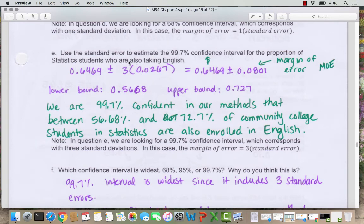So here we can say our p-hat value, our statistic, 0.6469 plus or minus the 0.0801, which came from multiplying our standard error times three. Subtracting, we find the lower bound is 0.5668 and the upper bound is 0.727 after rounding. So notice this is wider than our 68% interval estimate because we're more confident in our answer.